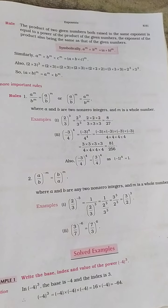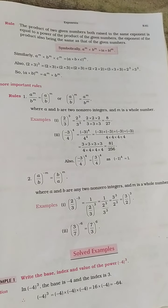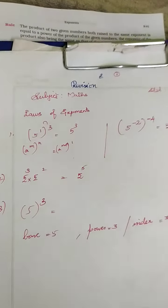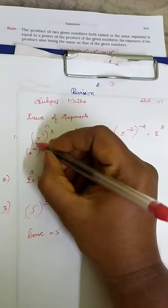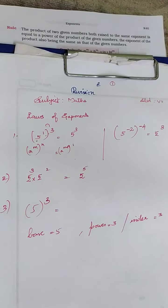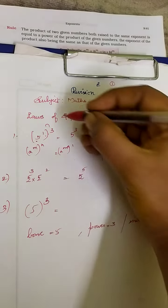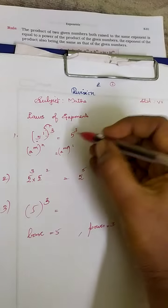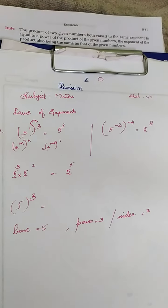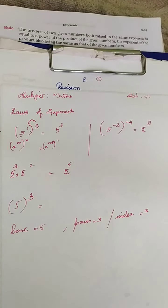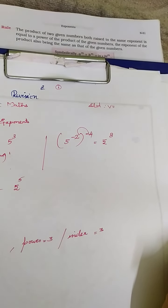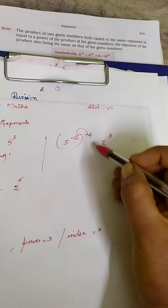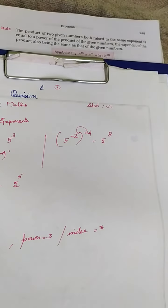Now we are going to learn a few one-word questions based on these formulas. The first is 5 power 1, whole power 3. It is of the model a power m, whole power n. When you have two powers, you multiply them: 1 into 3 is 3, so the answer is 5 power 3. When you have two negative powers, you multiply them: 4 twos are 8, and minus into minus is plus, so the answer is 5 power 8.